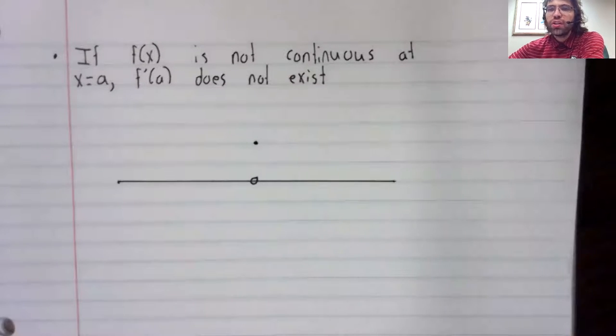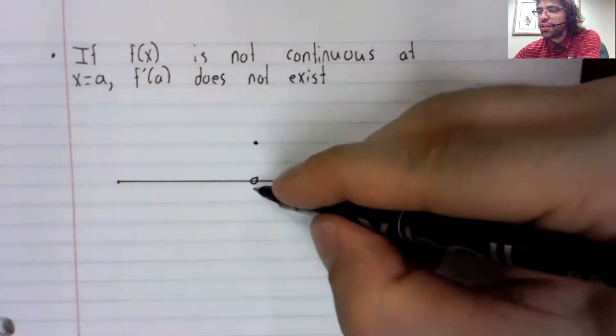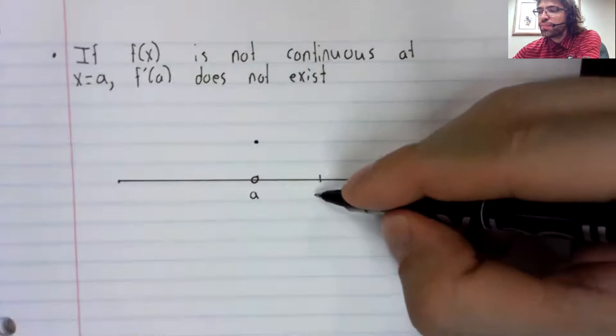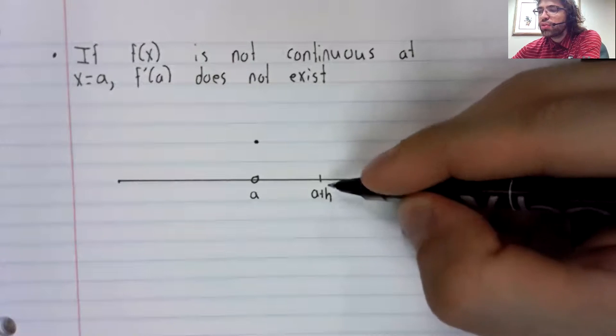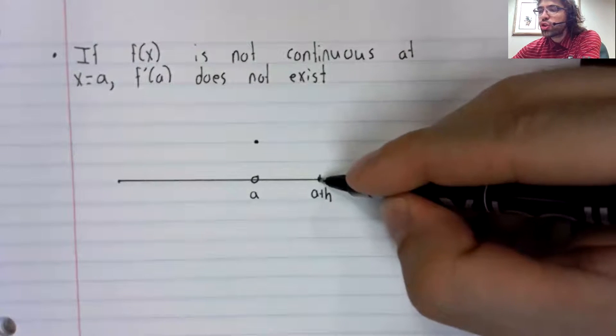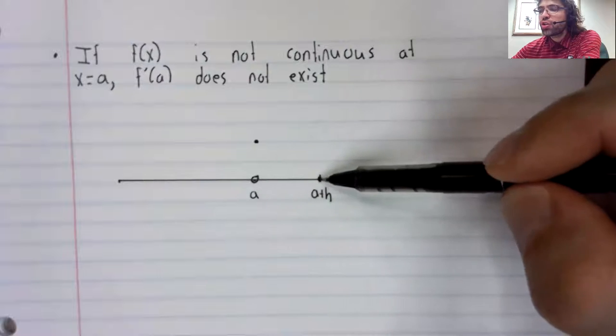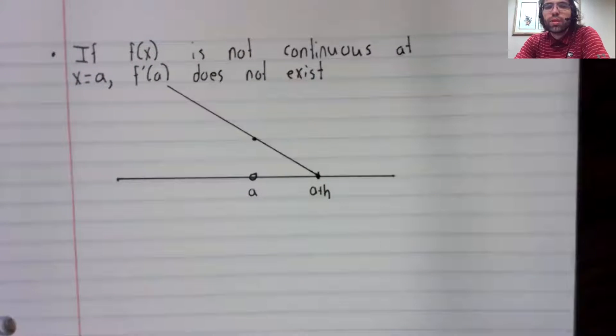To see that it's not differentiable, let's look at average rates of change. If this is a, and here's a plus h, then the average rate of change on this interval is the slope of that secant line.